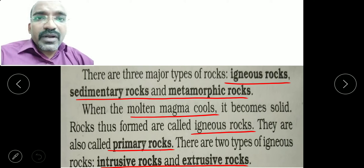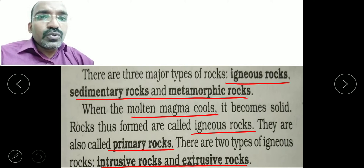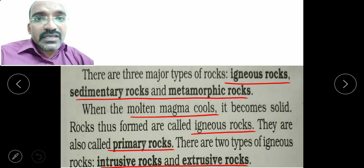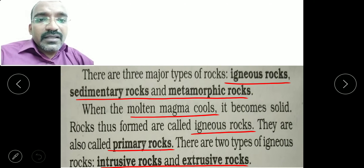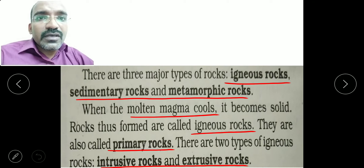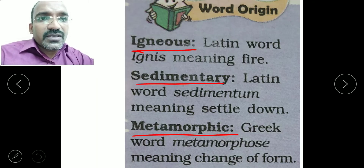Igneous rocks are also called primary rocks. There are two types of igneous rocks: intrusive rocks and extrusive rocks.